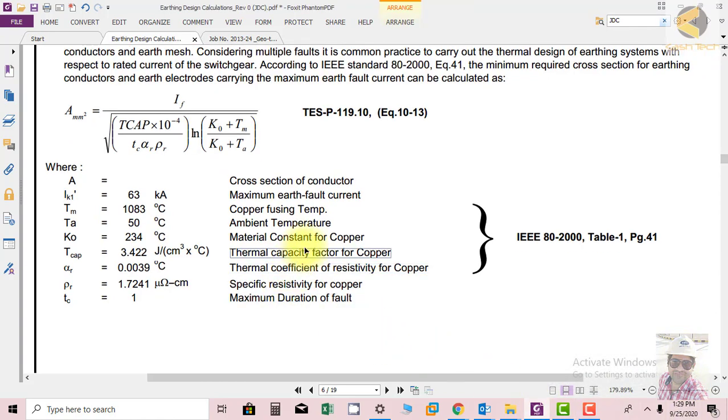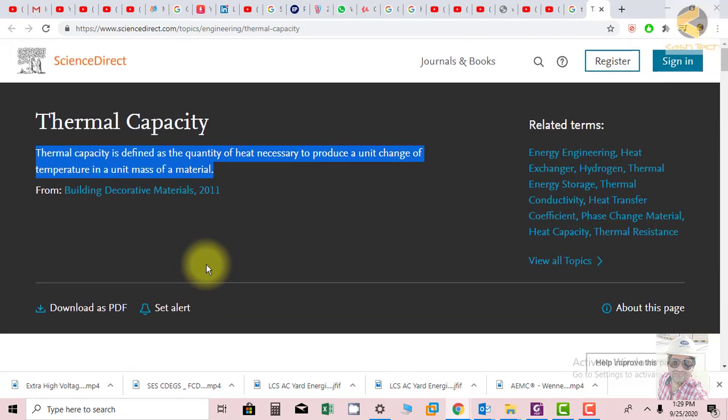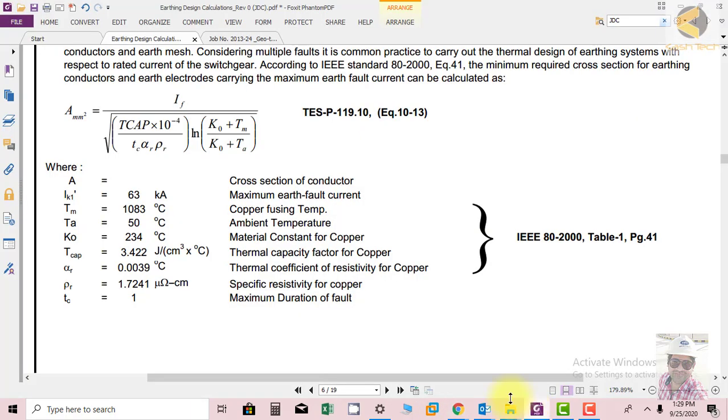Thermal capacity factor for copper: thermal capacity is defined as the quantity of heat necessary to produce a unit of temperature change per unit of mass.